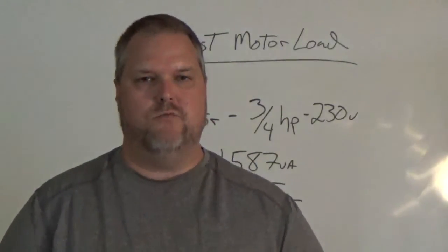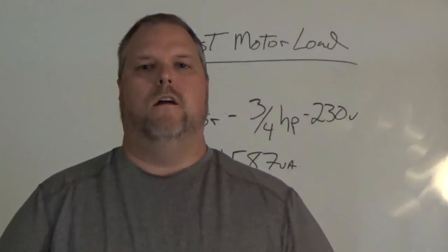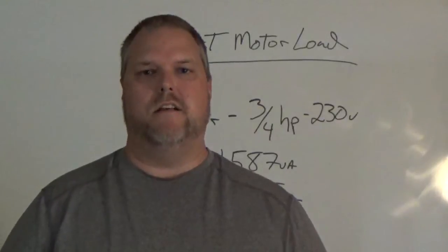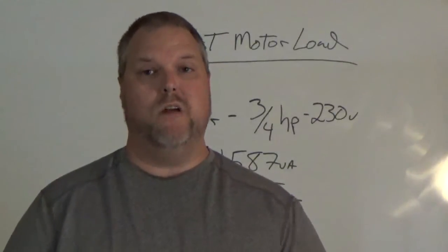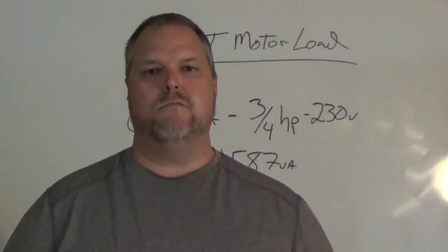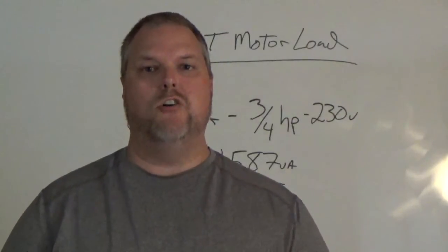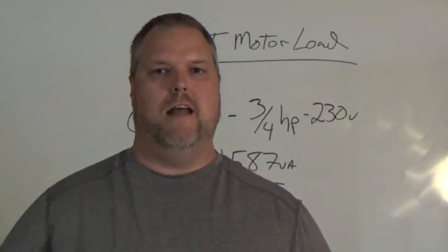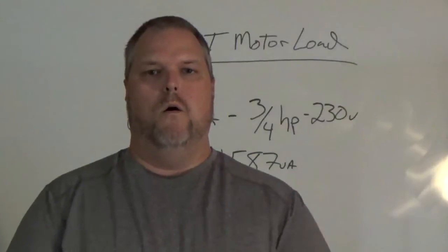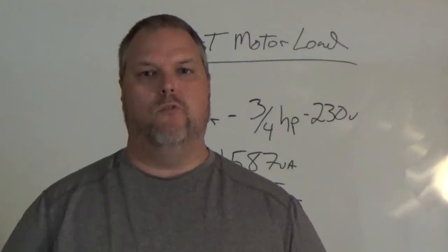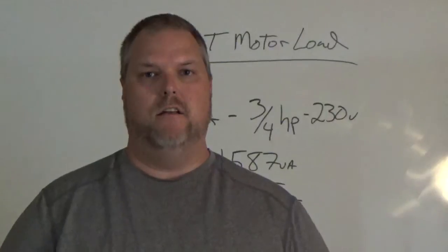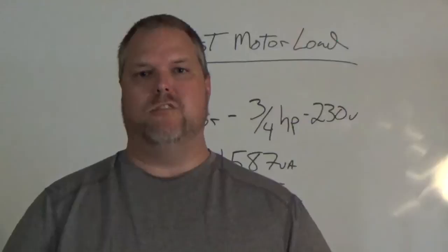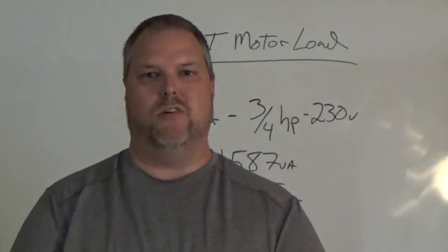So my question is: why 0.25? Here's what we have to figure. Going through motors, Article 430 is going to tell us that if we are adding multiple motors, which we have in a dwelling, the largest motor needs to be calculated at 125 percent and every motor after that needs to be taken at 100 percent. When we did the fixed appliances, we already took it at 100 percent. So one of those motors we need to just multiply by 25 to give us our largest motor calculation.